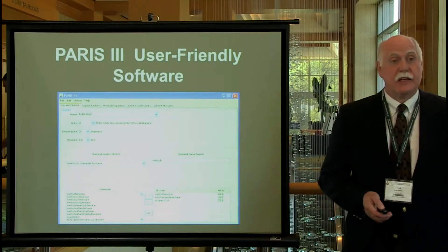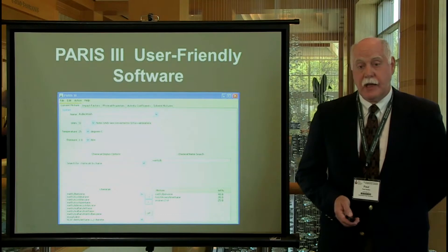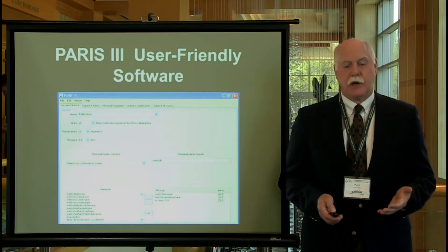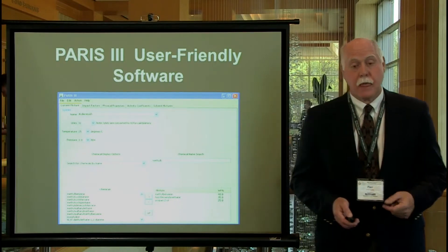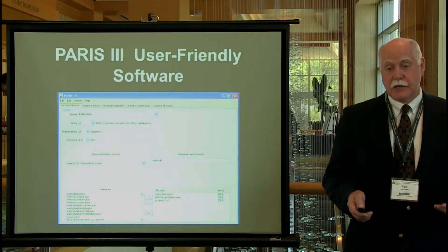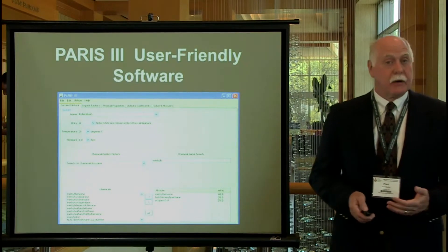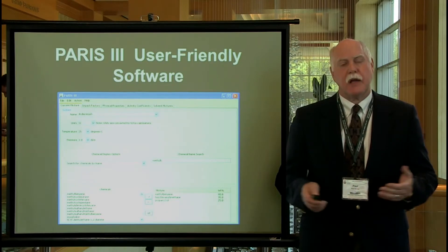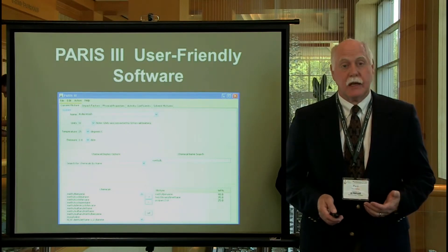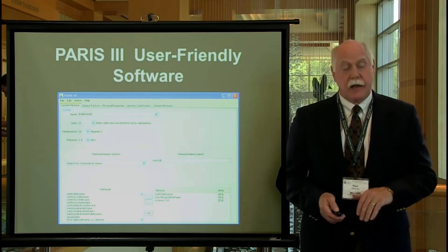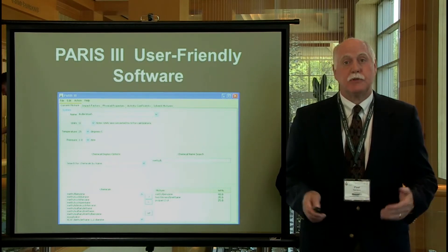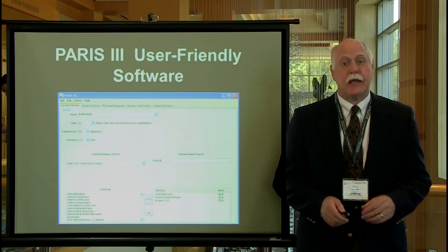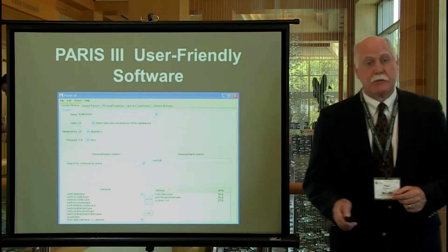Here we have an example of what the initial screen looks like in Paris. It is a user-friendly software. This is where the user would enter their solvent mixture that they're trying to find a replacement for. We also have screens which show the environmental impact of the solvents that the user enters, another screen which displays all the properties of the solvent entered, and another screen where the user is able to select different solvents they're interested in using for the replacement mixture.